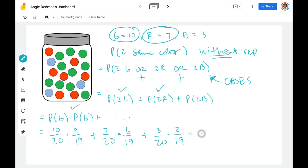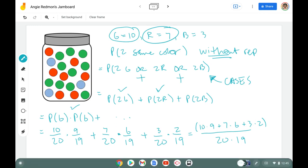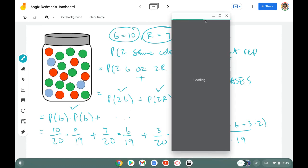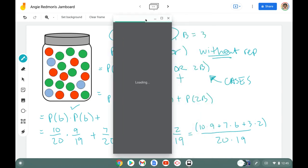I can simplify this a little bit. I can type it in just like this, but I'm a math teacher. I can't help myself. I have the same denominator for everybody, 20 times 19. What I really want to do is the 10 times nine, the seven times six, and the three times two. It's going to be a little easier to type into my calculator.